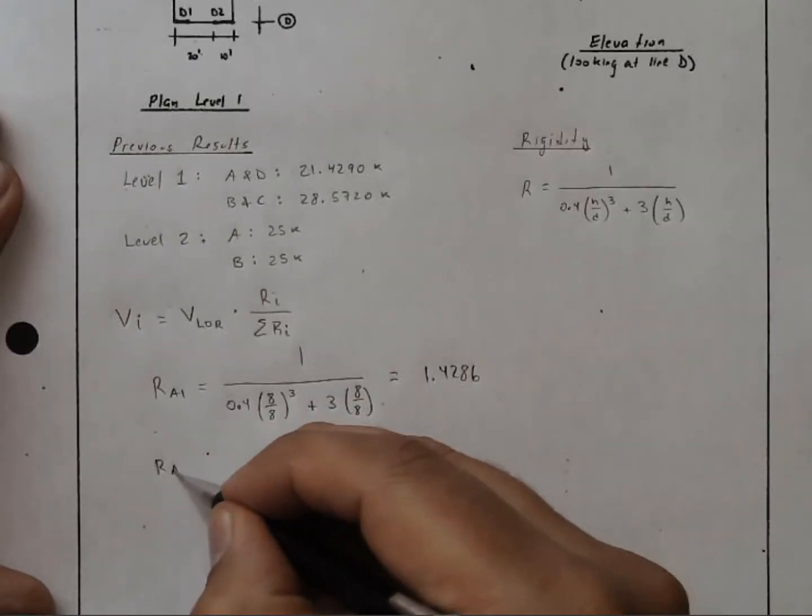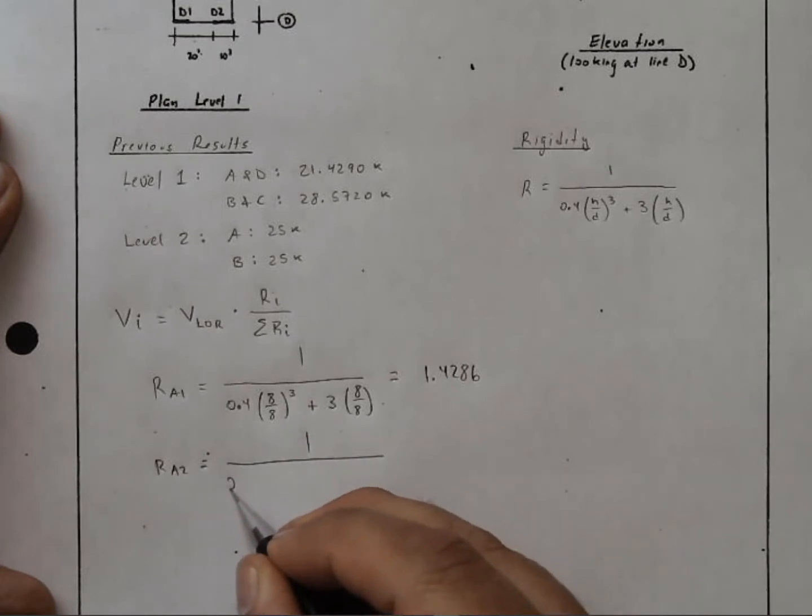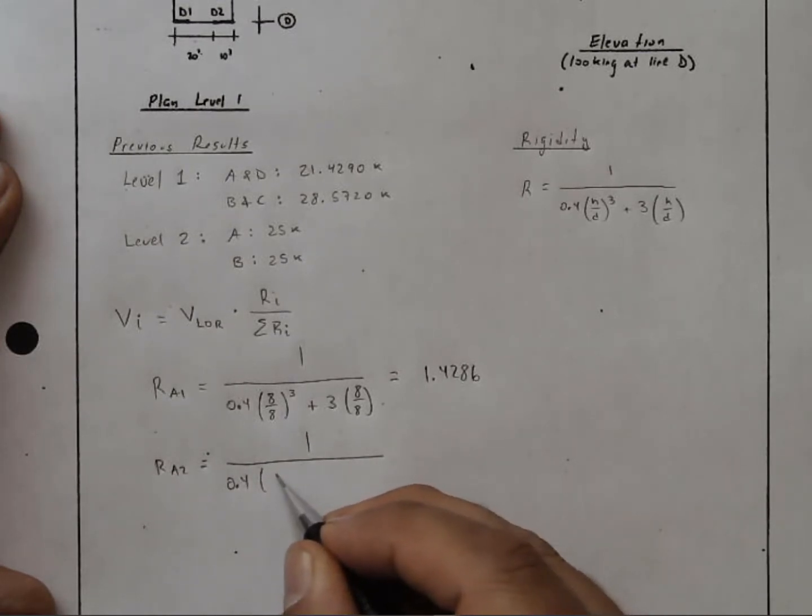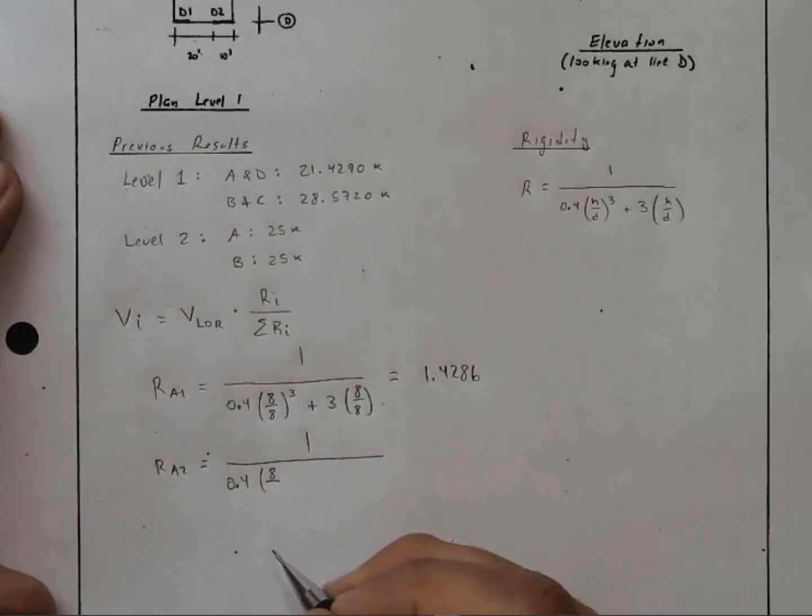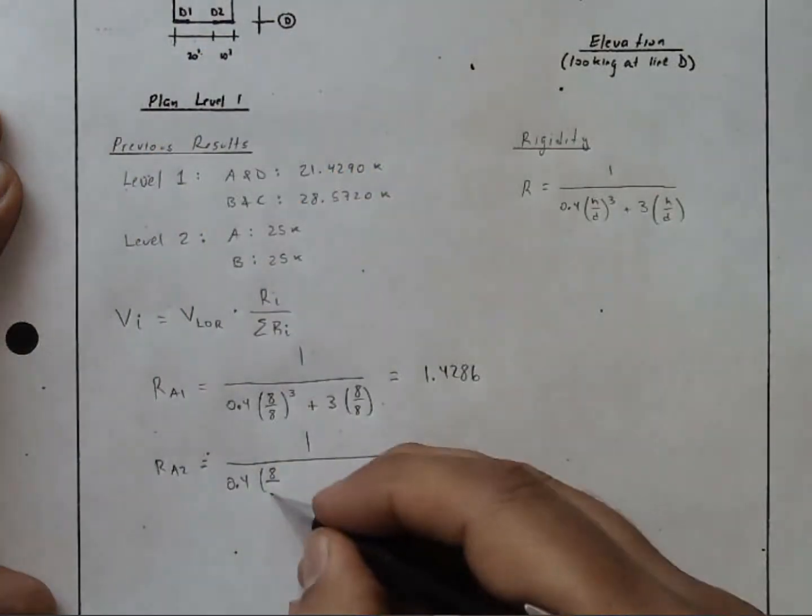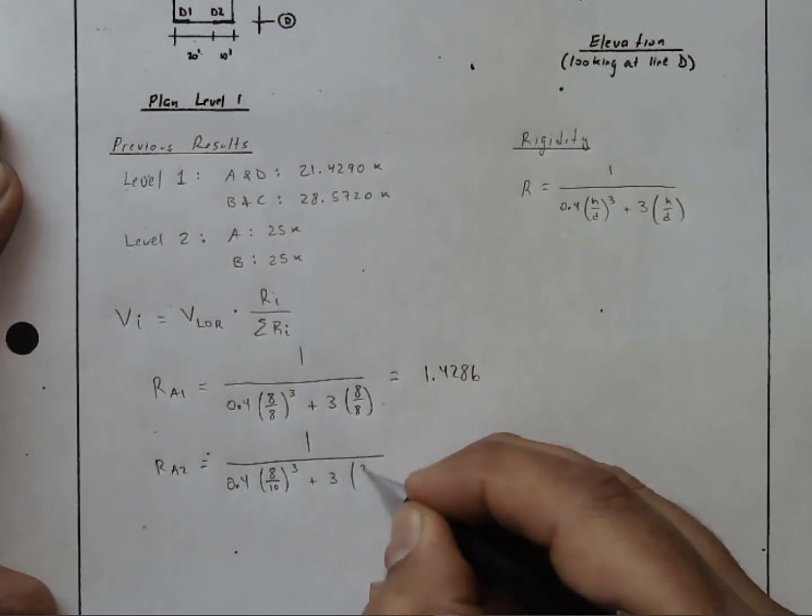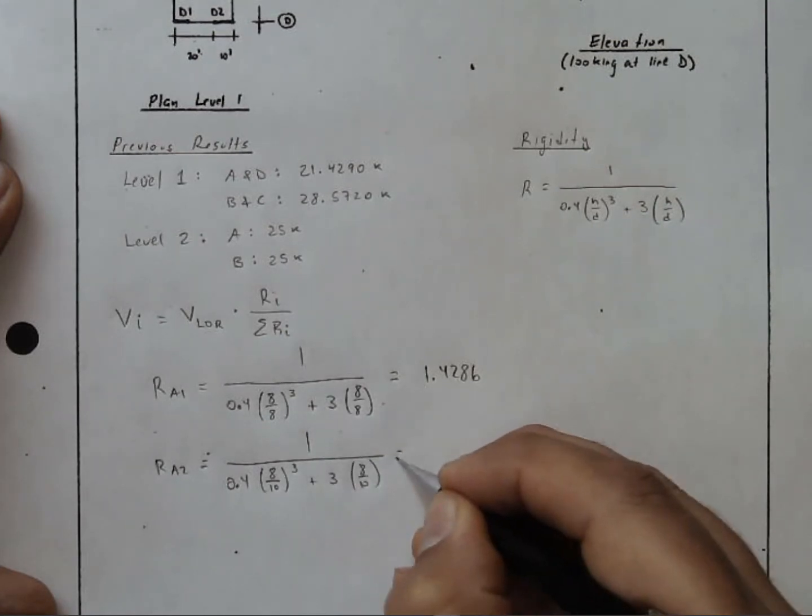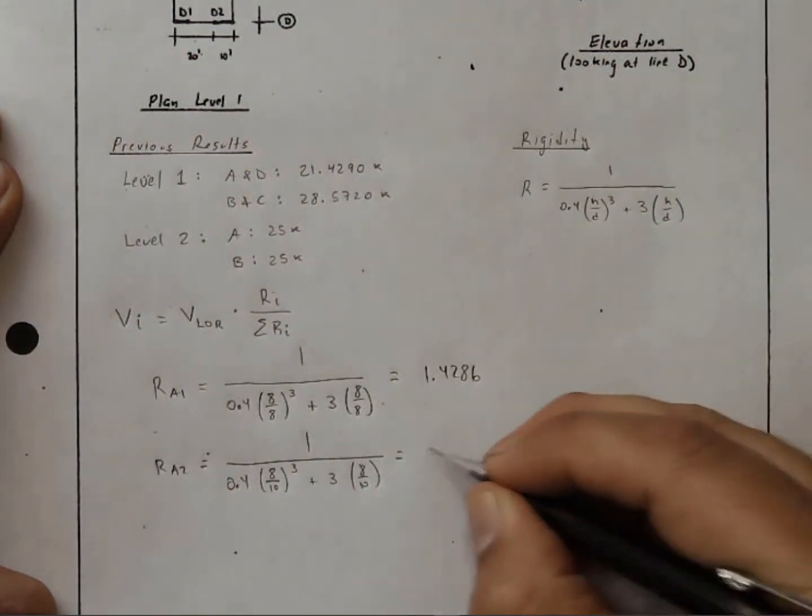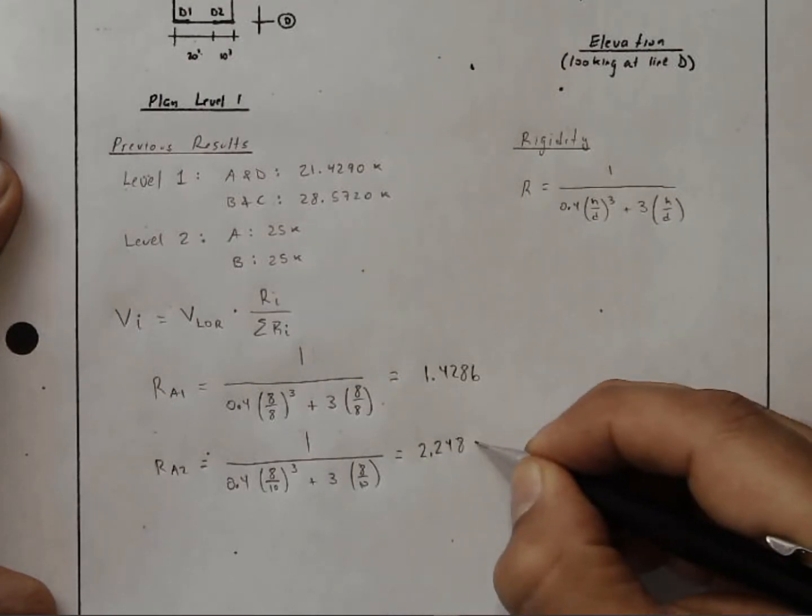The rigidity for A2 is a very similar expression, 0.4. The height of the wall is still 8. The depth of the wall, however, A2 right here, is this 10 feet here. And that's cubed. Evaluate this. This gives us 2.2482.